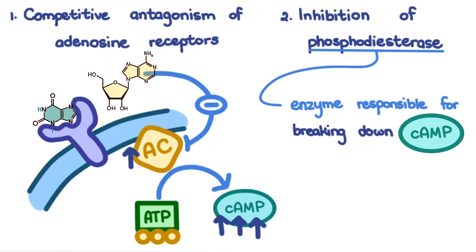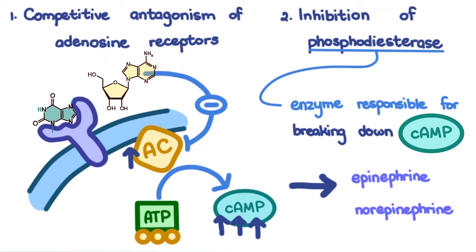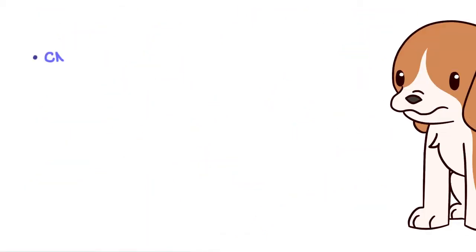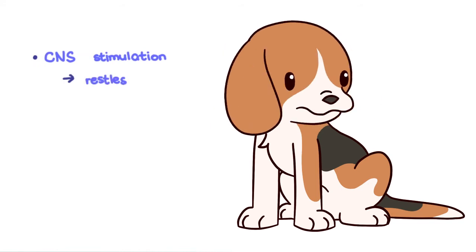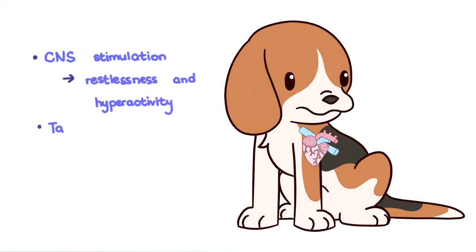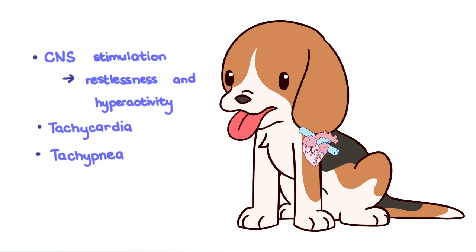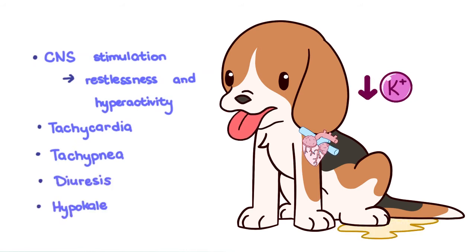Cyclic AMP increases the release of epinephrine and norepinephrine from the adrenal medulla. This causes CNS stimulation, leading to restlessness and hyperactivity, as well as tachycardia, tachypnea, diuresis, and hypokalemia.